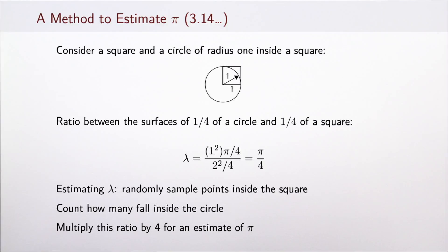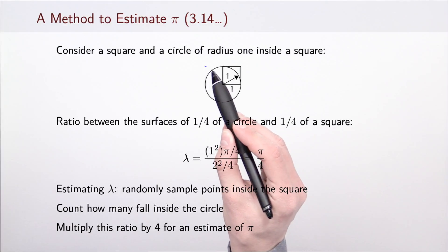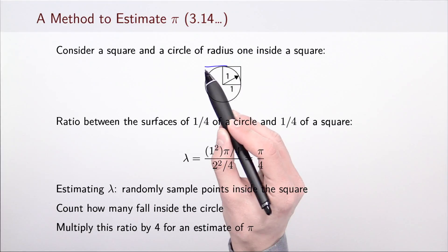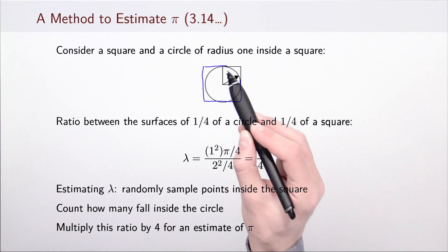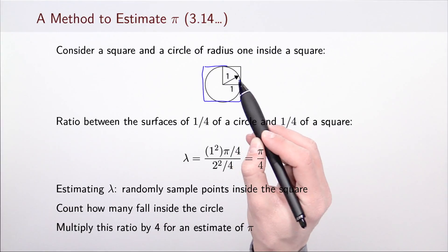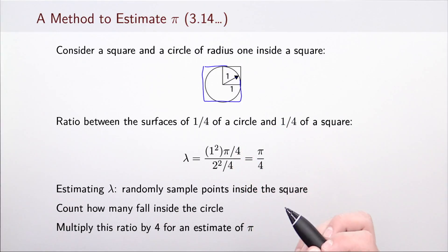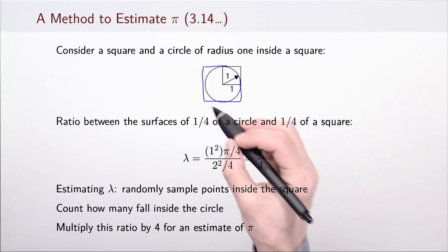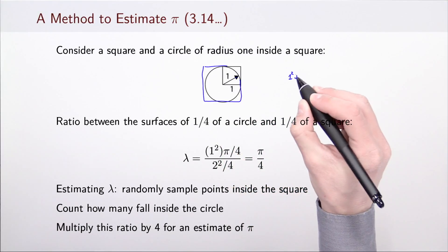Let's look at a method to estimate the value of pi. Here I have a square and inside it I have a circle. Suppose that the radius of the circle is 1. That makes the surface of the circle pi times 1 squared, so pi in total.